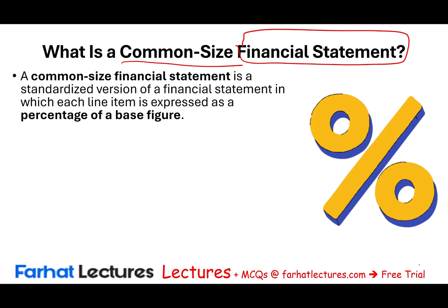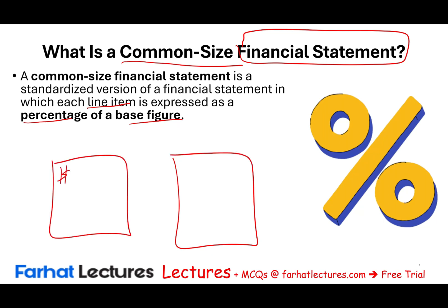A common-size financial statement is a standardized version of the financial statement in which each line item is expressed as a percentage of a base figure. We are going to look at the income statement, look at the balance sheet, and express all the figures as percentages. We will select a figure — for example, for the income statement, we would select revenue as the base figure.